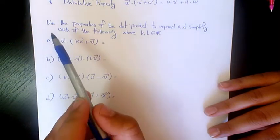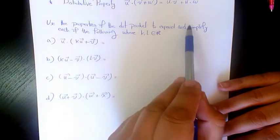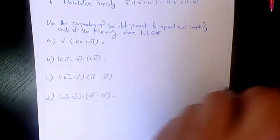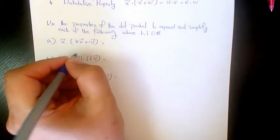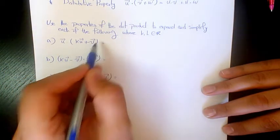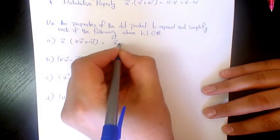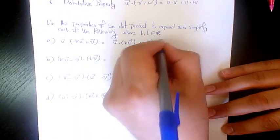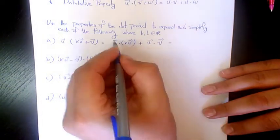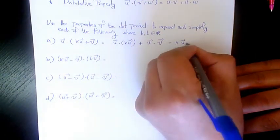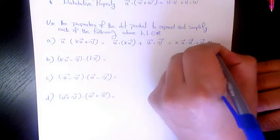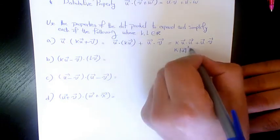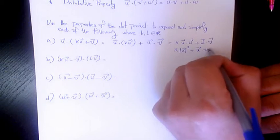Now let's look at these examples. Use the properties of the dot product to expand and simplify each of the following, where k and l belong to real numbers. So u dot (ku plus v) — that's going to be u dot ku, plus the dot product of u and v, giving us k times the magnitude of u squared, plus u dot v.